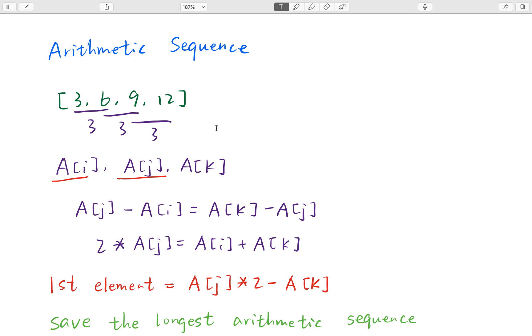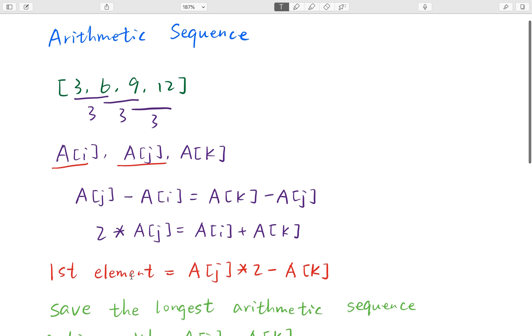At first, get some information from the definition of the arithmetic sequence. Let's say A[i], A[j], A[k] are arithmetic. What does that mean? That means A[j] - A[i] = A[k] - A[j]. So we know 2 * A[j] = A[i] + A[k].